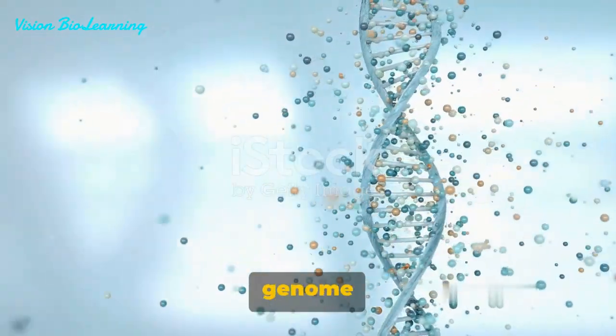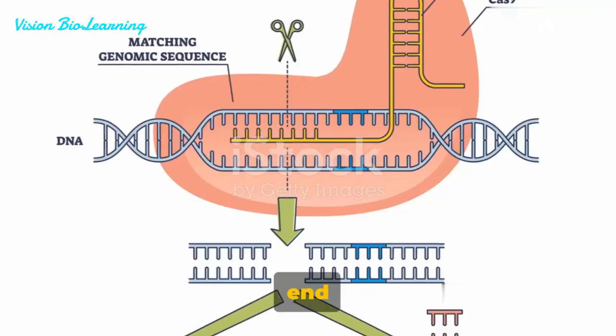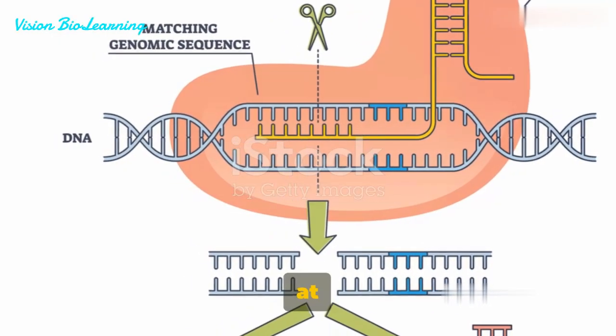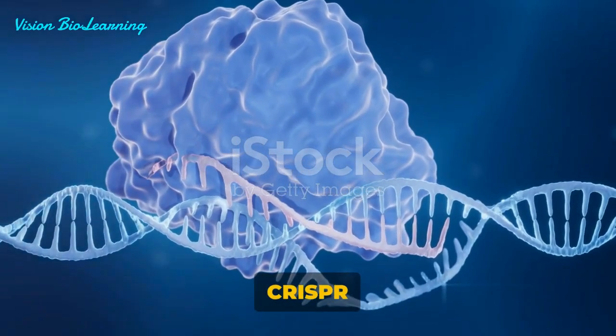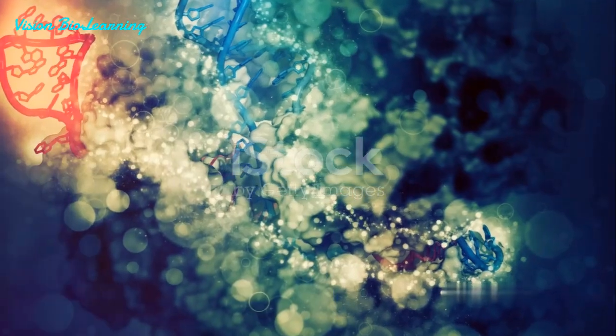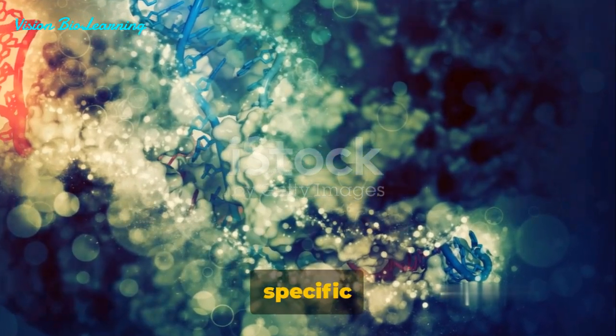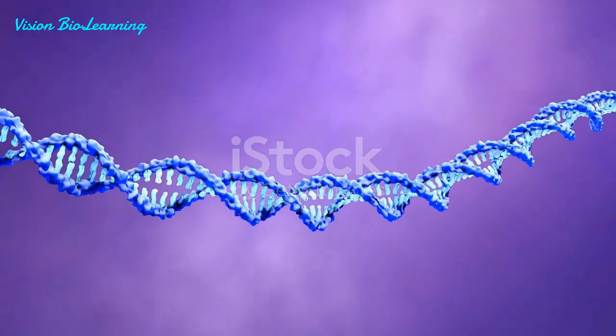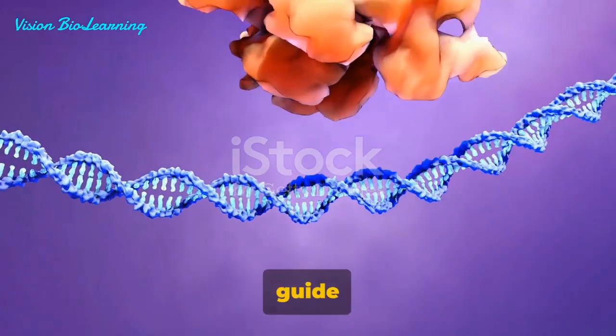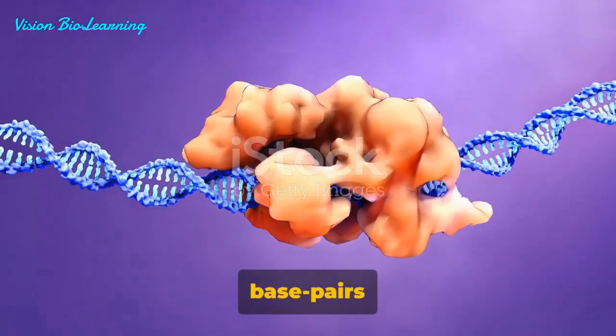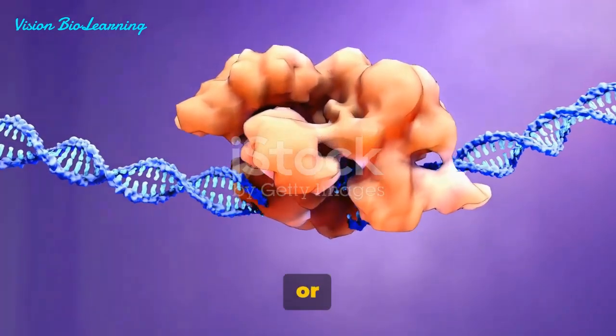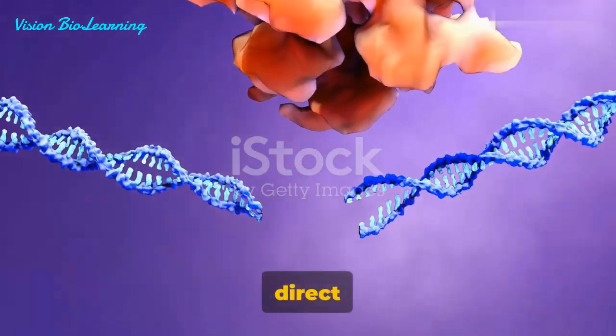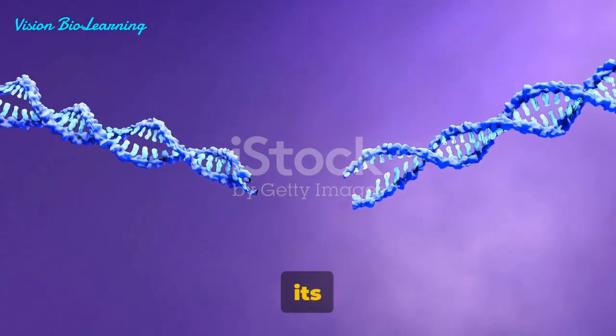But the list of genome editing technologies doesn't end here. Let's take a look at a microbial marvel, the Cas9 nuclease from the CRISPR adaptive immune system. This enzyme is guided to specific DNA sequences via its guide RNA. This guide RNA directly base pairs with the DNA target, with a protospacer-adjacent motif, or PAM, helping to direct where the Cas9 enzyme makes its cut.